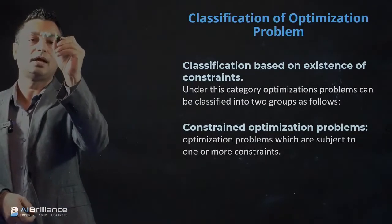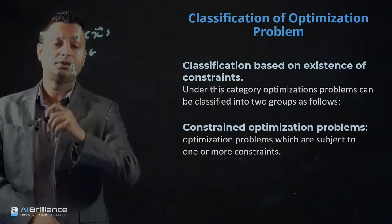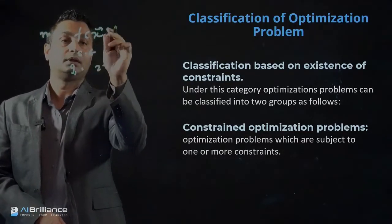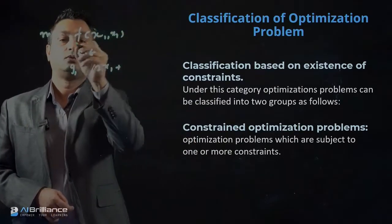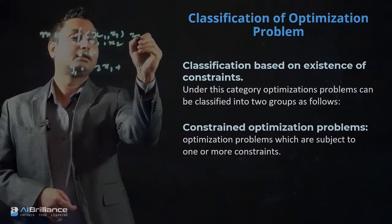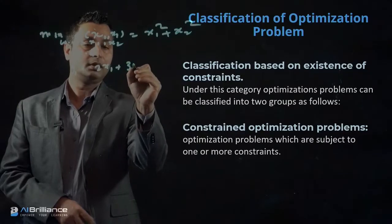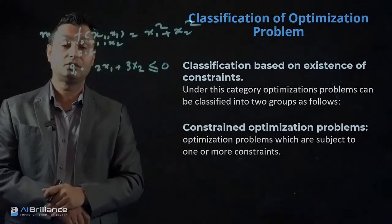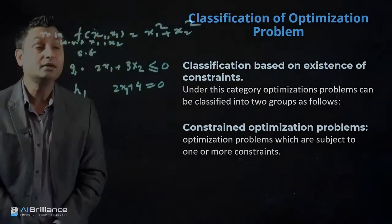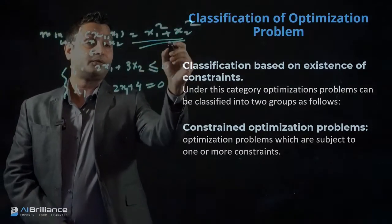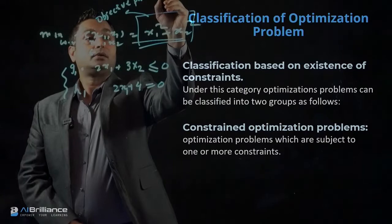This sort of problem will look like: minimize f(x1, x2) with respect to x1 and x2, and the constraint g1 could be 2x1 plus 3x2 less than or equal to 0. That's the constraint it needs to satisfy. It can also have an equality constraint such as 2x1 plus 4 equals 0. So we can have this sort of constraint on top of the objective function. This is the objective function, and we also have the constraint functions right here.